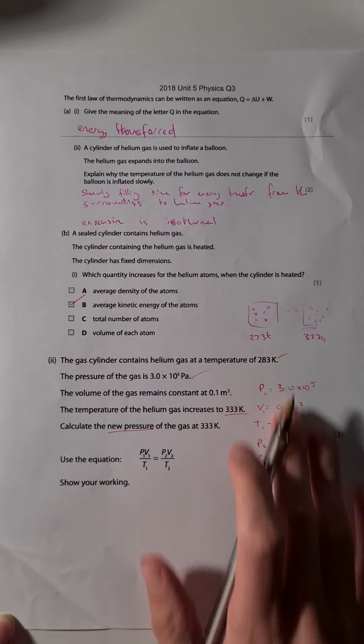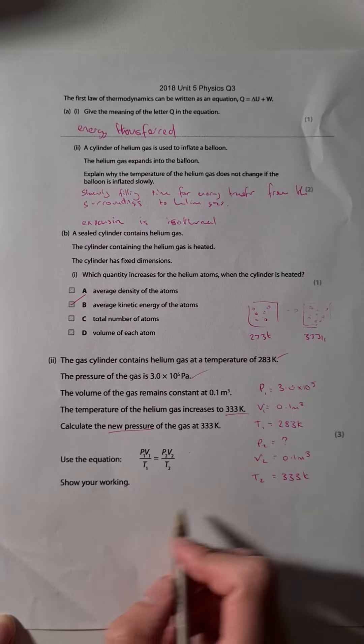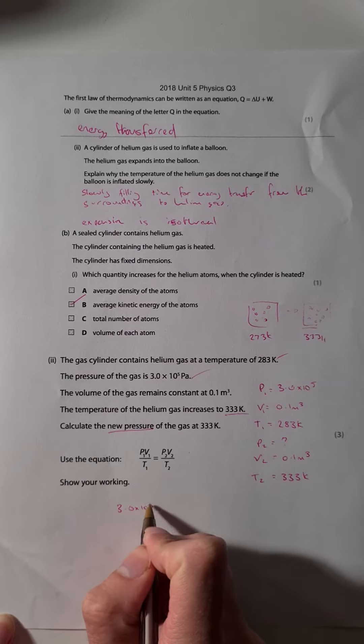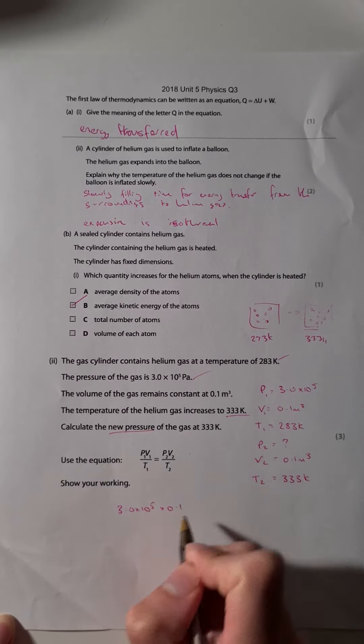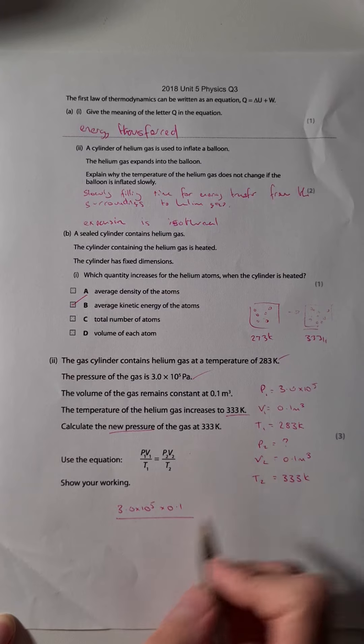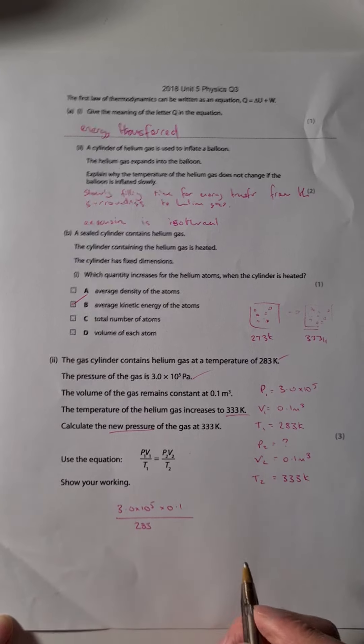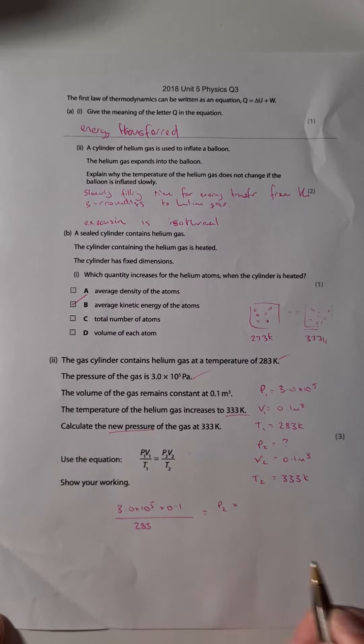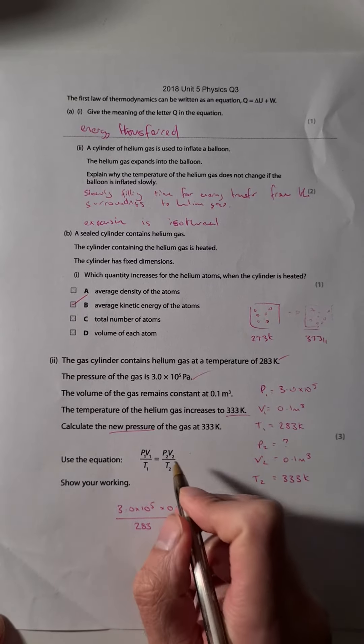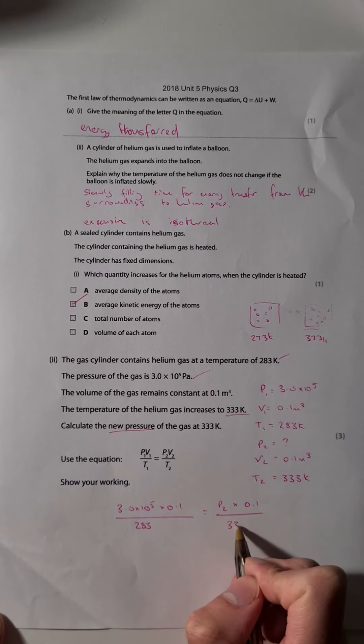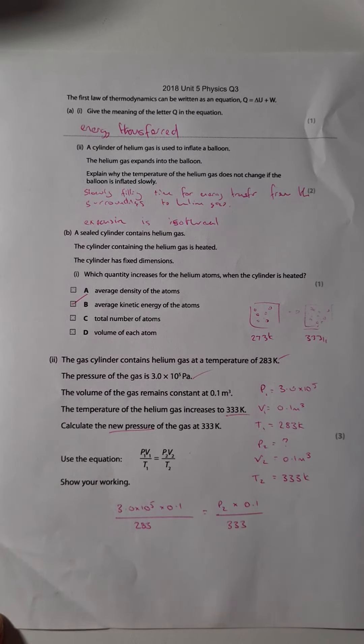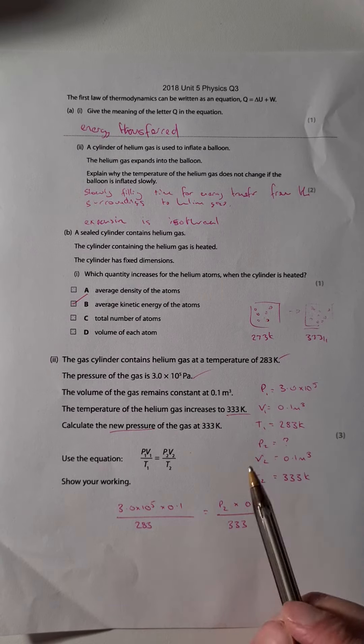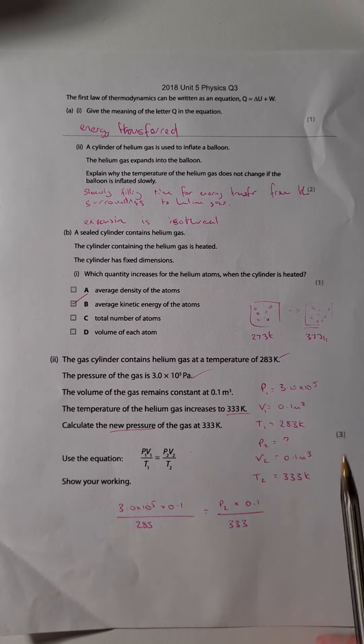By setting this out like this, I identify all my values, and then I can just look at this equation they always give you. I can then start to put this in. I've got P1, 3.0 times 10 to the 5, times V1, 0.1, over T1, 283 Kelvin, and that's going to equal P2, which I don't know, times 0.1, the volume, divided by 333. So that's my first mark.